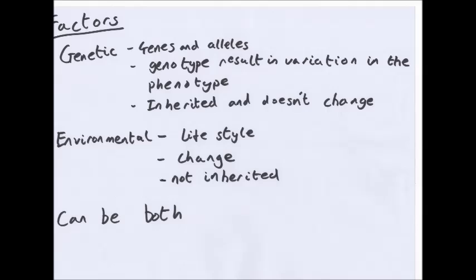So factors that affect variation. There are two: genetic and environmental. Genetic, that's genes and alleles. So the genotype results in variation in the phenotype. Different individuals have different genes, and these genes will be passed on and form variation. And they're inherited. And once you've got it, it doesn't change. You don't start off with blue eyes and suddenly have brown eyes. Environmental: this is your lifestyle, how much you eat, exercise. This does change over your life and it's not inherited. Examples of genetic factors are stuff like eye colour, blood group. Environmental factors are accent or tattoos. Or they can be both. So height. As I said earlier, if you have tall parents, you will have tall children. But diet and nutrition affects how much you grow.